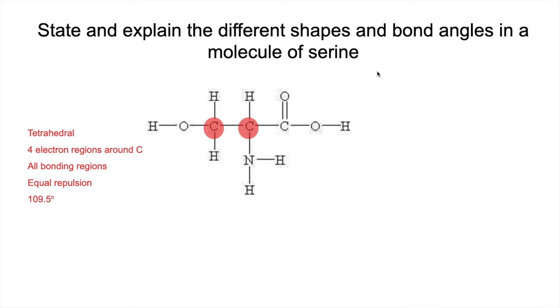Next we'll look at this carbon here. The shape around there is trigonal planar because we've got three electron regions around that carbon. Remember, a double bond counts as one electron region. All bonding regions, so we've got equal repulsion and the angle associated with that is 120 degrees.